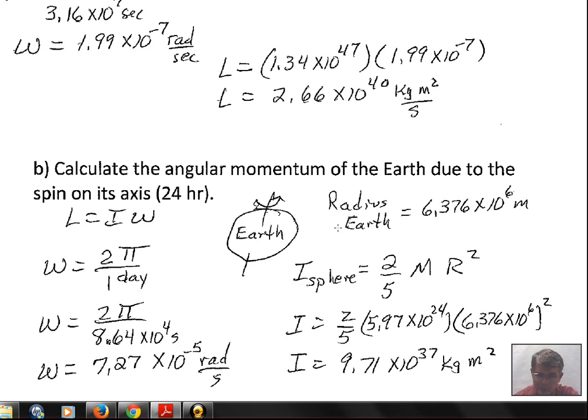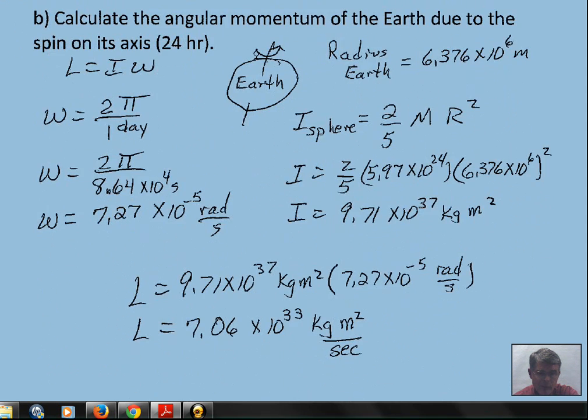It has a radius, 6.376 times 10 to the 6 meters. And the formula for calculating rotational inertia for a sphere, where the axis of rotation goes through the center of the sphere, is 2/5 MR². 2/5, the mass of the Earth, and radius of the Earth squared. So we calculate that. And here I'm showing a square on the R, as I should have had above. I get 9.71 times 10 to the 37th kilograms meter squared. And to find the angular momentum, then, we multiply those together.